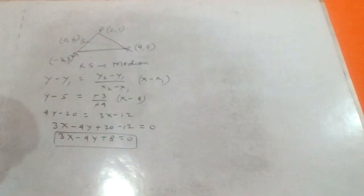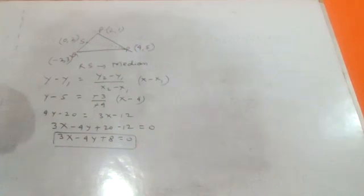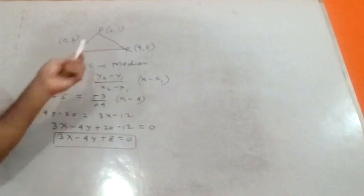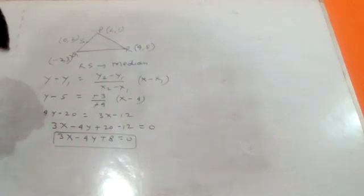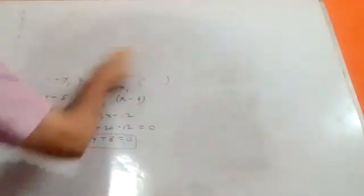So 3x minus 4y plus 8 equals zero is the final answer — the equation of median RS according to our problem. The angle between two perpendicular lines gives a product of slopes equal to minus one; for parallel lines m1 equals m2.